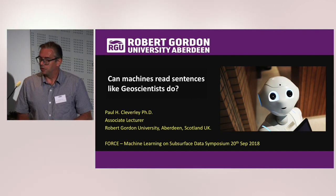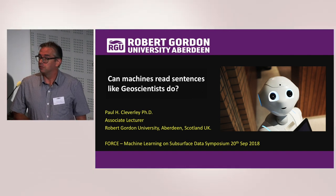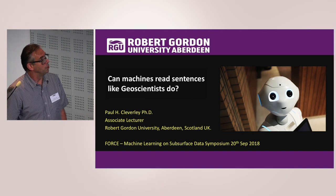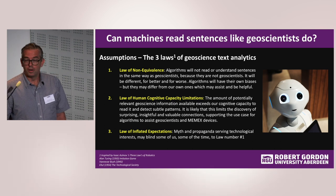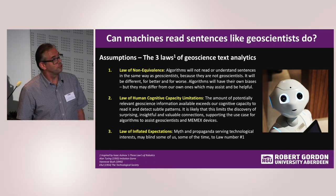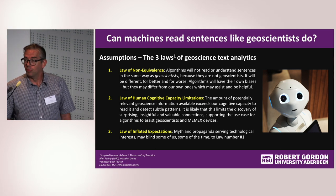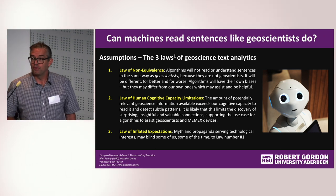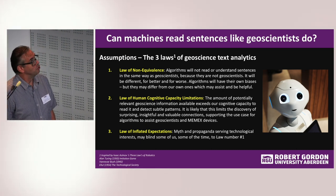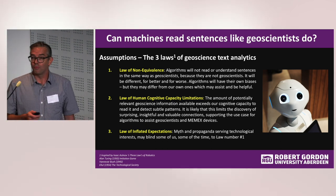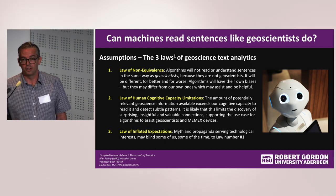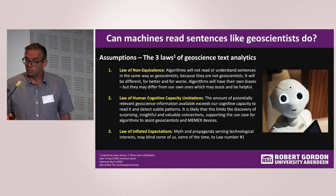Delighted to be here to share some findings of exploratory research I've been doing looking at text analytics in geoscience. Just a bit of fun — a play on Asimov, Turing, and the three laws for text analytics. Based on the question, can machines read text like geoscientists do? The first law is the law of non-equivalence: machines can't read text like geoscientists because they're not geoscientists. They have their own biases, strengths and weaknesses, which are different from our own — and that could be useful.